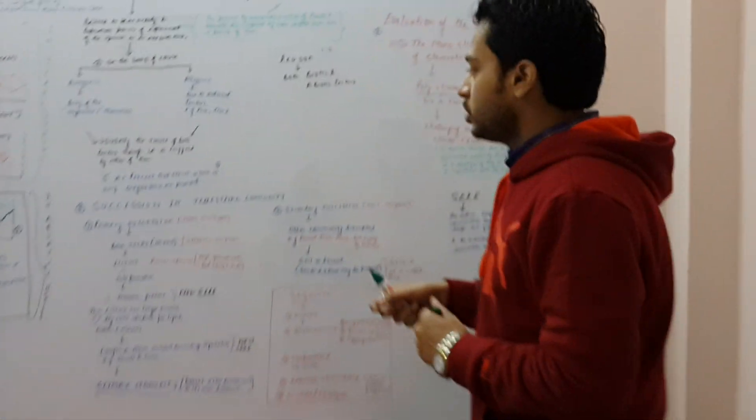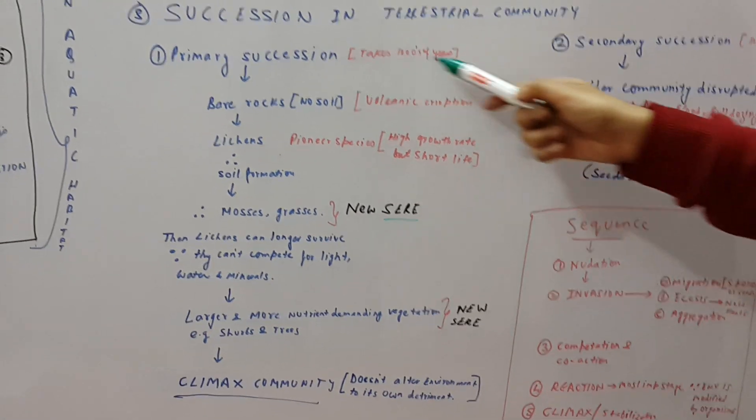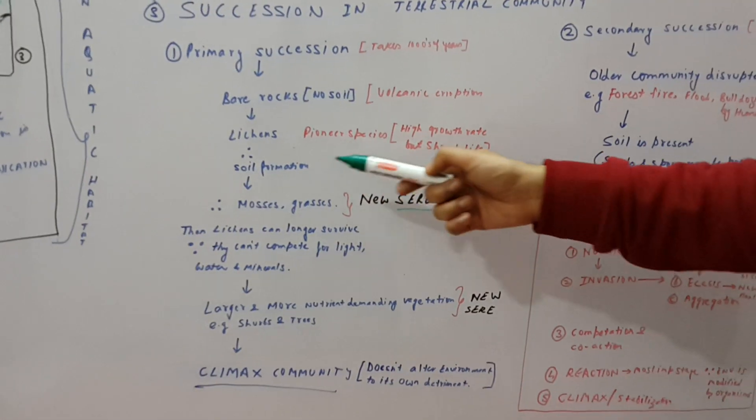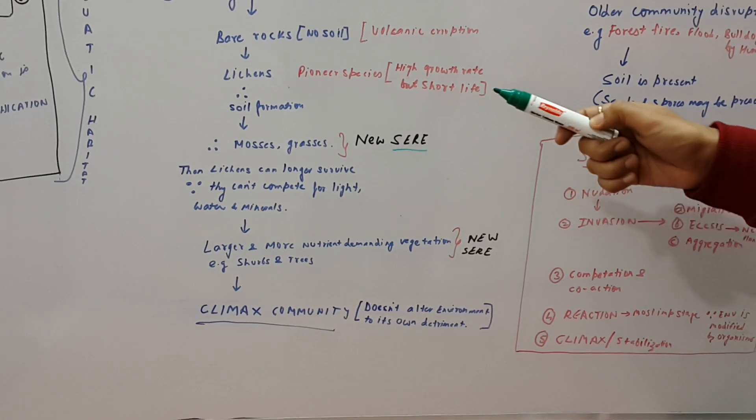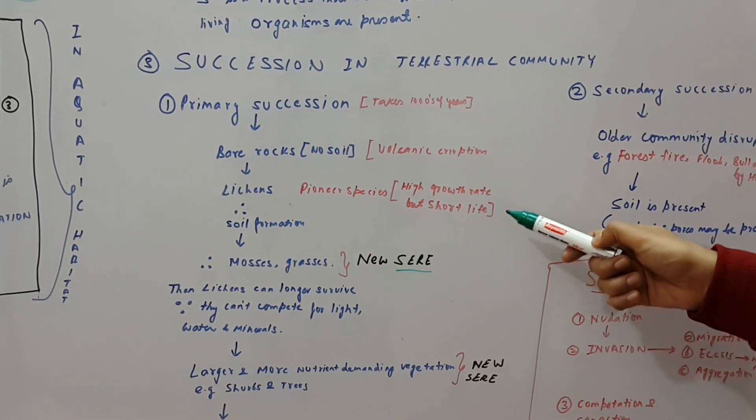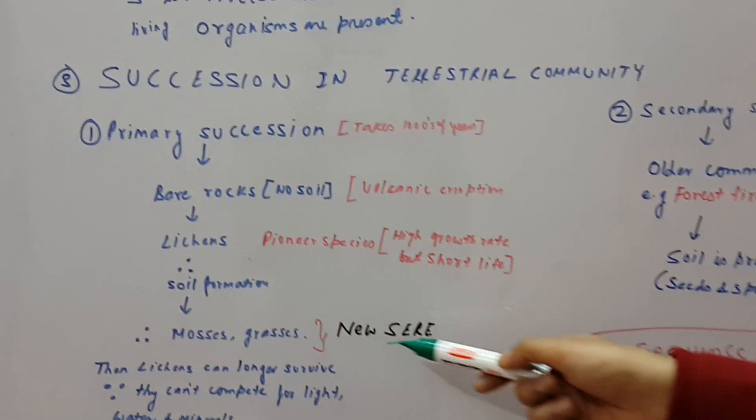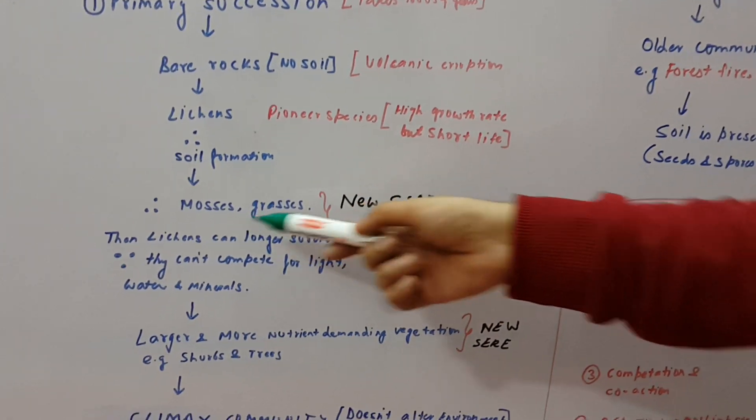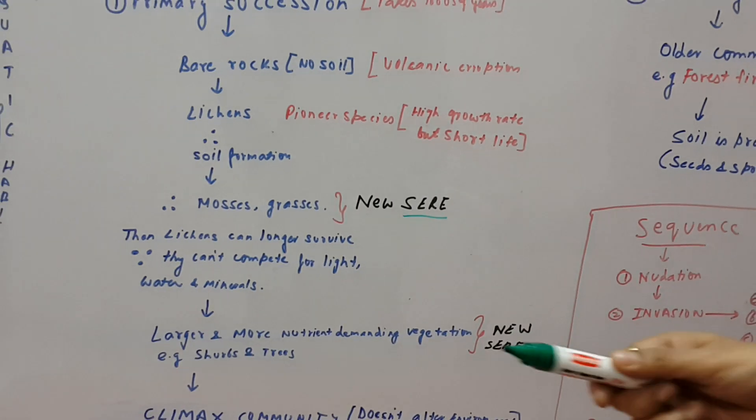I will also show you the certain stages again. Like in primary succession, we take thousands of years. Like a bare rock, no soil. For example, after a volcanic eruption, lichens come in. They are pioneer species. Now important thing to remember about pioneer species is that they have a very high growth rate but their lifespan is short. Then we have soil formation, then we have a new sere. Sere means a complete sequence of the communities that live in. Important thing about sere is that every sere alters the environment a little bit.